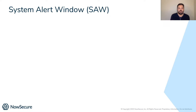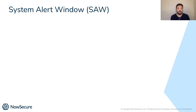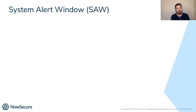Moving on in Android 11, the system alert window, or SAW, has changed a bit. Many of you might be aware there's a lot of issues associated with the system alert window — these overlay attacks, or Cloak and Dagger, or a lot of other issues. They're kind of associated with how that can be used to make interesting Android malware that can really do some interesting overlay attacks. Look up Cloak and Dagger if you're interested — it's really an interesting paper around that issue.